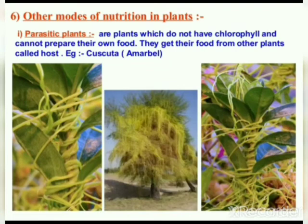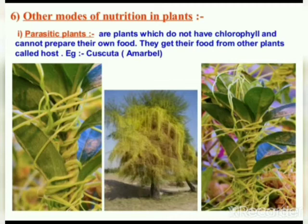Here are some other modes of nutrition in plants. First, parasitic plants are plants which do not have chlorophyll and cannot prepare their own food. They get their food from other plants called the host. An example is Cuscuta, also known as Amarbele.